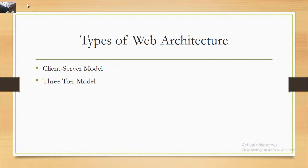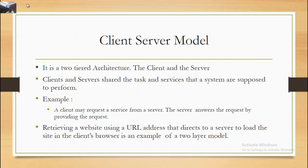Types of Web Architecture include the Client-Server Model, the 3-Tier Model, and Service-Oriented Architecture. The Client-Server Model is a 2-tiered architecture consisting of the client and the server. Clients and servers share tasks and services. For example, a client may request a service from a server, and the server answers by providing what was requested — such as retrieving a website using a URL address that directs the server to load the site in the client's browser.